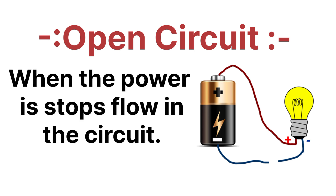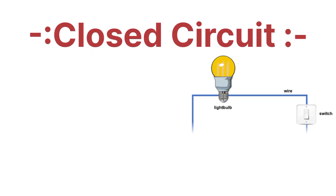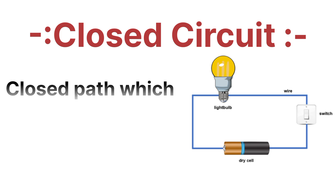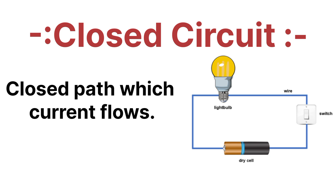An open circuit is very simple — when a circuit is open, it is called an open circuit. An open circuit breaks the flow of electric current or the flow of electric charges in a path. If a circuit is closed and we make it open, then the current will not flow in that path. That is why we call it an open circuit.